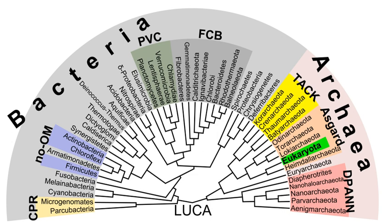A prokaryote is usually a unicellular organism, sometimes a multicellular organism, that lacks a membrane-bound nucleus, mitochondria, or any other membrane-bound organelle. The word prokaryote comes from the Greek pro and karyon. Prokaryotes are divided into two domains, archaea and bacteria. In contrast, species with nuclei and organelles are placed in the third domain, eukaryota. Prokaryotes reproduce without fusion of gametes. The first living organisms are thought to have been prokaryotes.